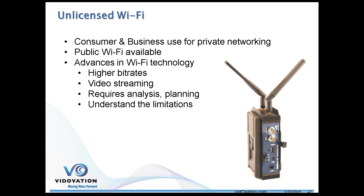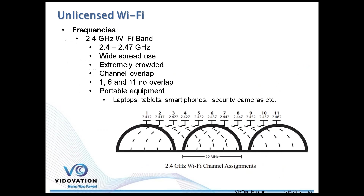We have consumer and business use of private networks or Wi-Fi, and there have been a lot of changes. We now have technologies with higher bit rates that lend themselves to video streaming, though there are some complications. Some of the 802.11ac capabilities vendors are still figuring out. Looking at the traditional 2.4 GHz band, we can have up to 11 channels, but as you can see in the picture, there are really only three channels that don't overlap or interfere with each other.